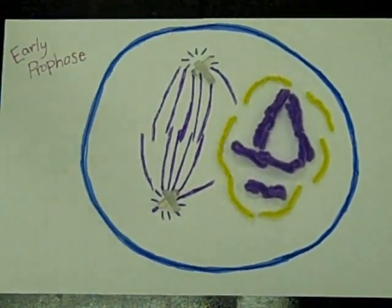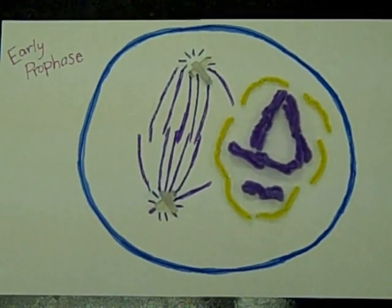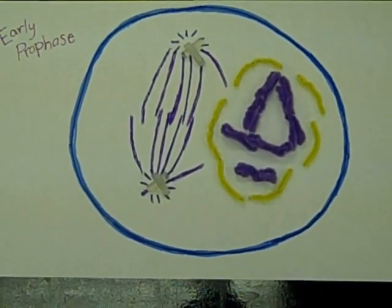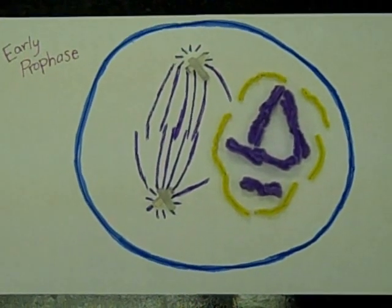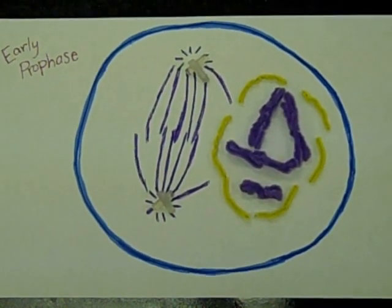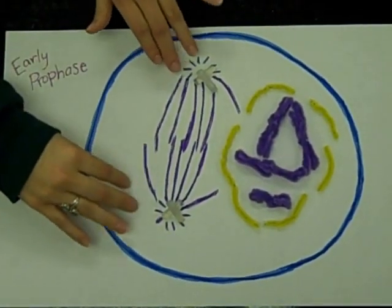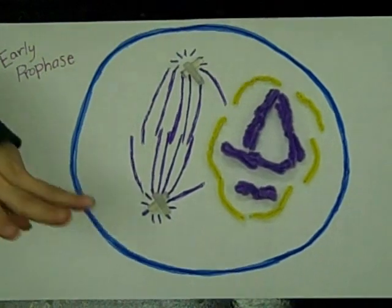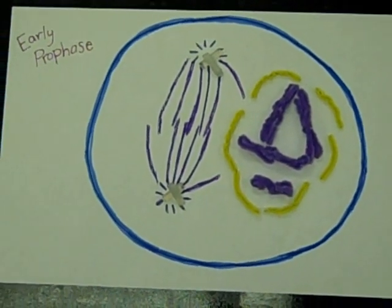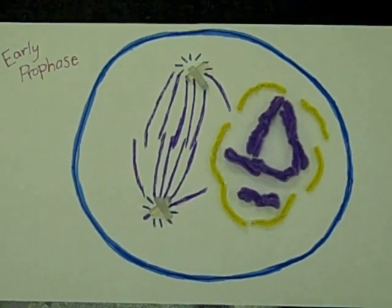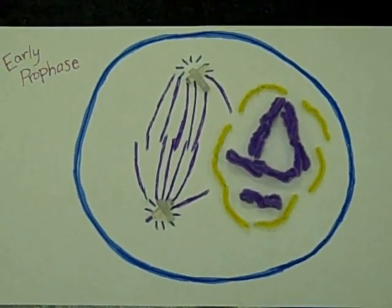Chromosomes form two identical pairs, shaped like butterflies, with tiny waists called centromeres. From my centrosomes, which have spread to opposite sides of the cell, mitotic spindles formed out of the very cytoskeleton that holds me together, have grown. And that marks the end of early prophase.